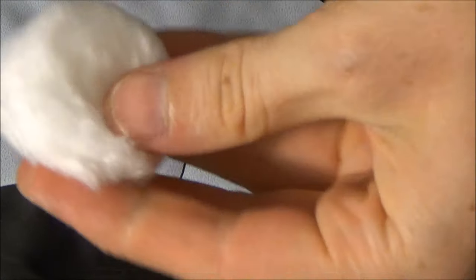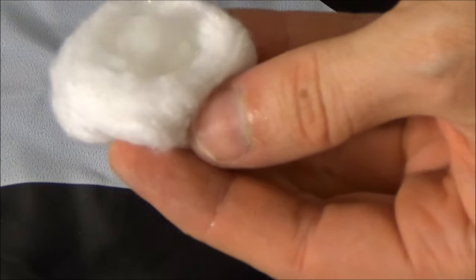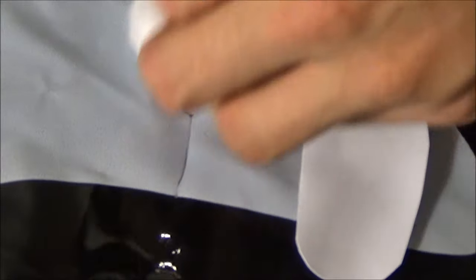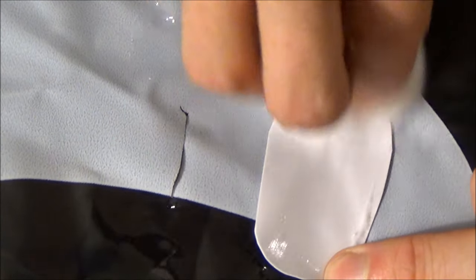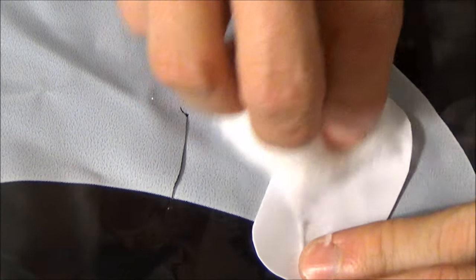For the next type of damage, a puncture, a patch will be used. The toy is of course deflated first, and next a small patch with rounded corners is cut big enough to cover the puncture.